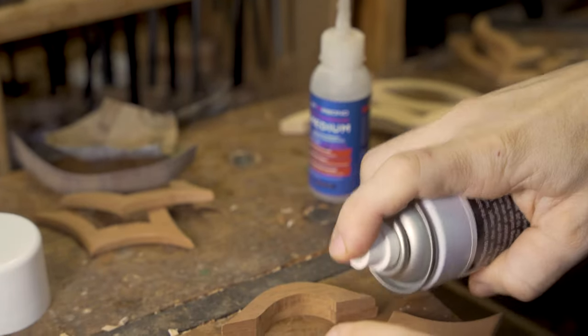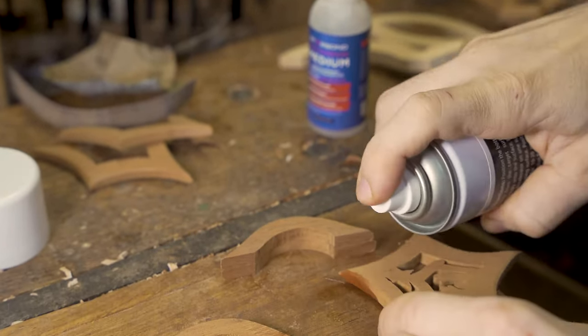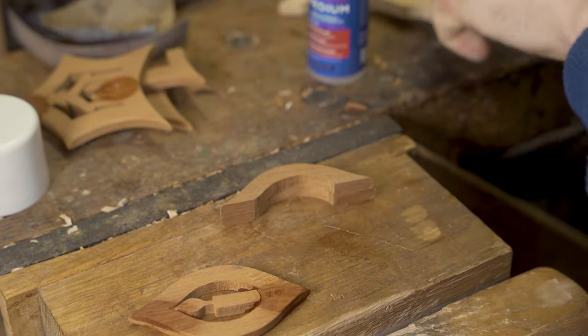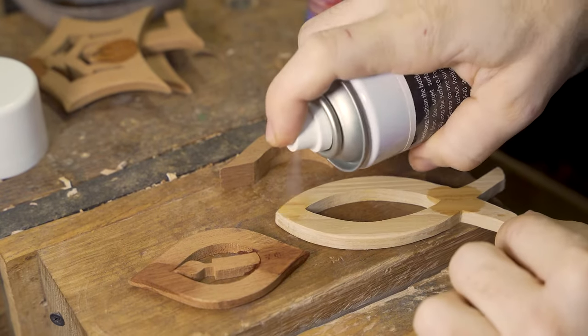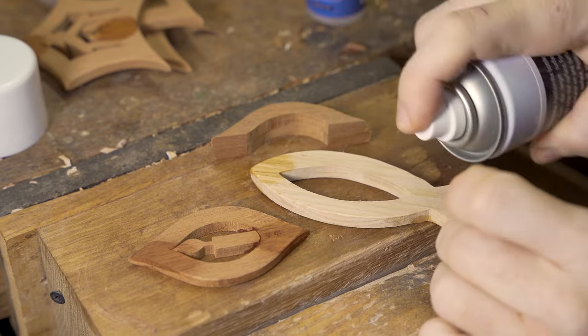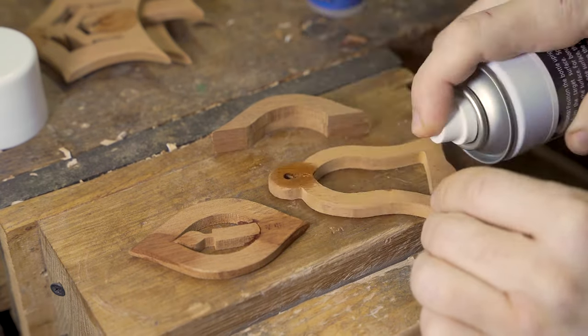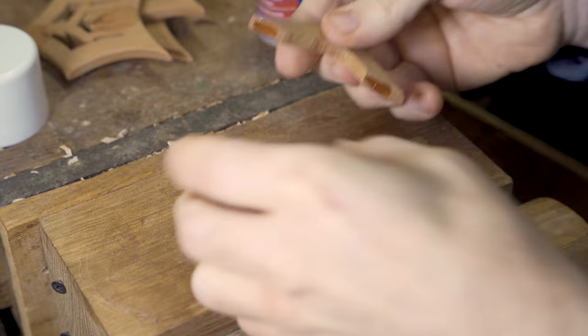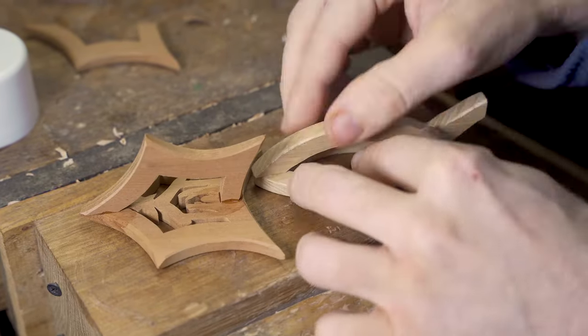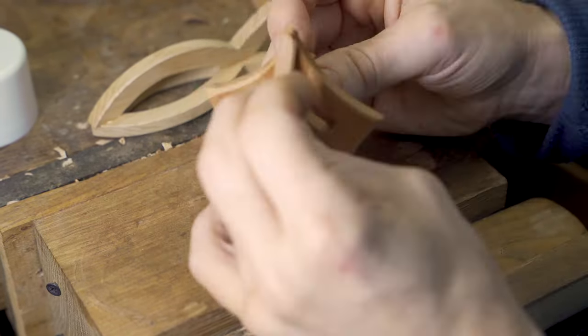We then go across to putting our 3D decorations together using our Starbond superglue and the accelerant. Spray the accelerant onto one part of the design, put some superglue on the other part of the design, and stick the two together.